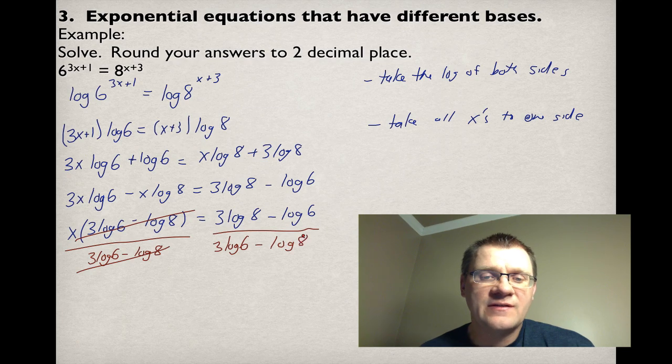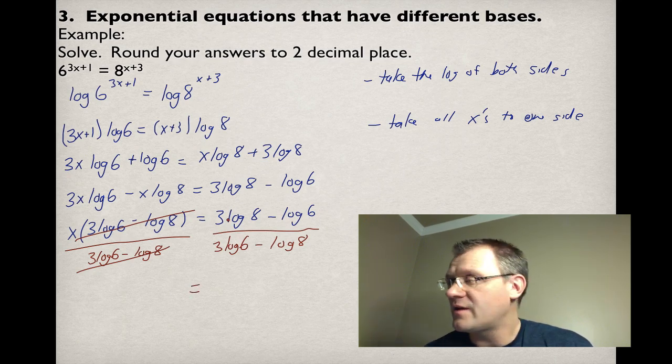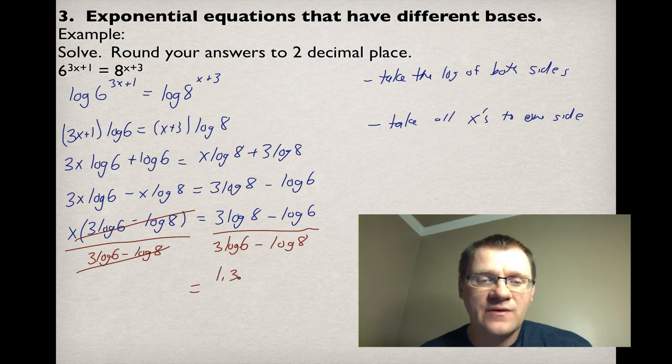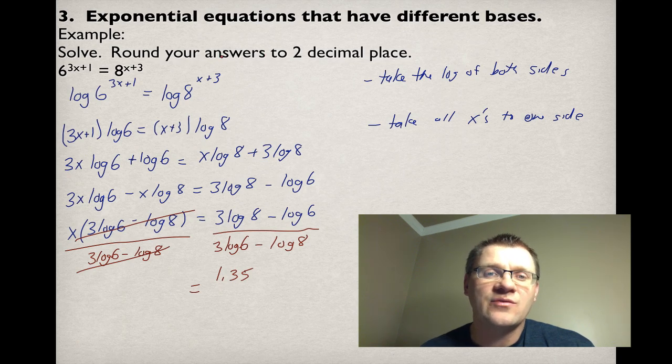We get this expression that if we plug into our calculator, so log(8)·3 - log(6) divided by log(6)·3 - log(8), we will get a final answer of 1.35. You should try that in your calculator. You should get an answer that's 1.35. It asked us to round it to two decimal places.